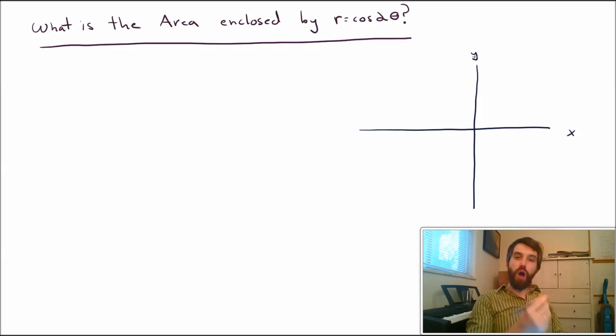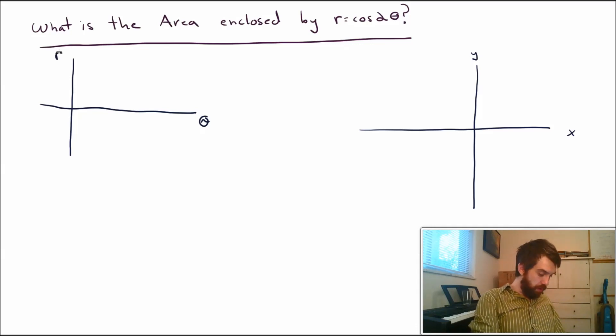But before I do that, I want to sketch a graph of r as a function of theta. What I mean by that is I want to draw a graph where on the horizontal we have the argument theta, and on the vertical we have the argument r. The reason I'm doing it this way is that I know what this graph looks like. I know what y equals cosine of 2x looks like. So in particular, I know cosine, that graph starts up at 1,